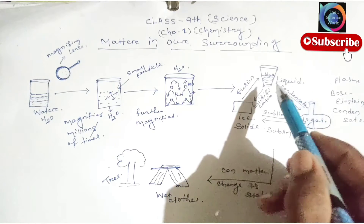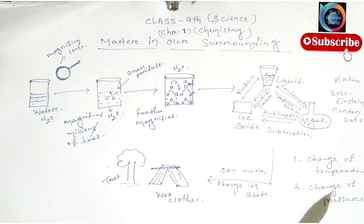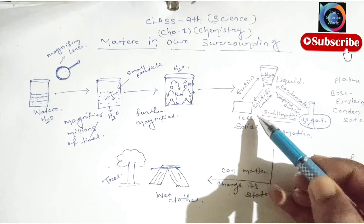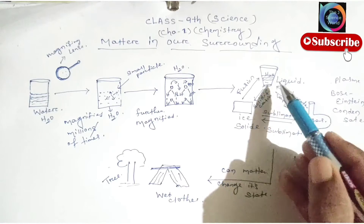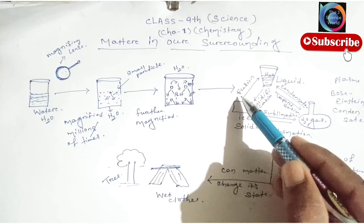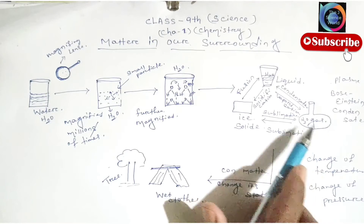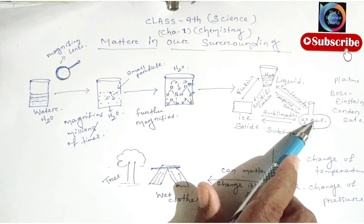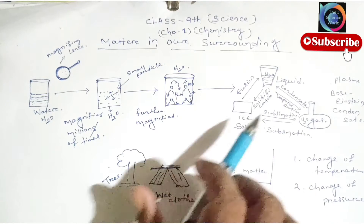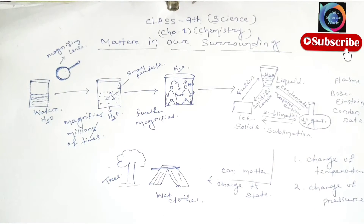When H2O, that is our liquid, is changed into ice with the help of change in temperature or pressure, this process is called solidification. When liquid changes into solid. If solid changes into liquid, that process is called fusion. When liquid is changed into gas, that is our vaporization process. When gas is changed into liquid with the help of change in temperature or pressure, that is condensation. Similarly, solid to gas and gas to solid are both called sublimation.